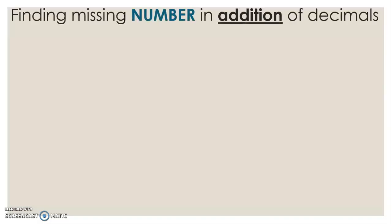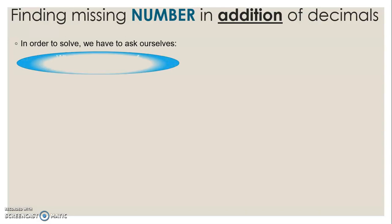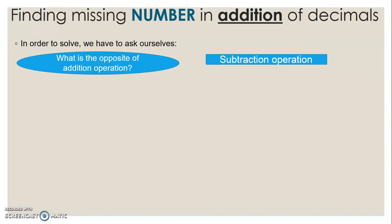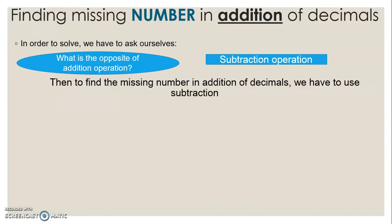Finding missing number in addition of decimals. In order to solve, we have to ask ourselves: what is the opposite of addition operation? The opposite of addition operation is subtraction operation. To find the missing number in addition of decimals, we have to use subtraction. Let us take several examples.